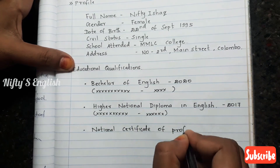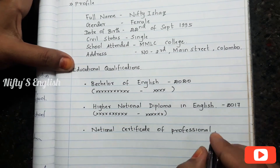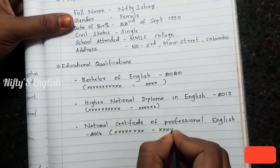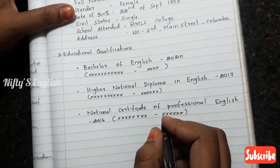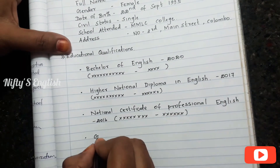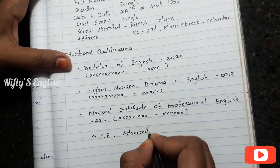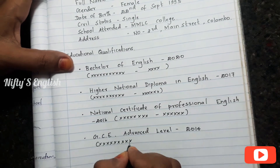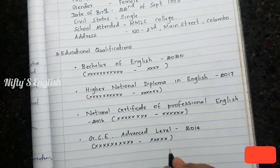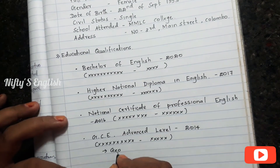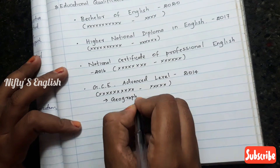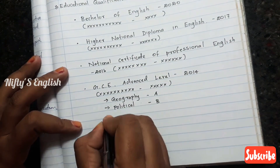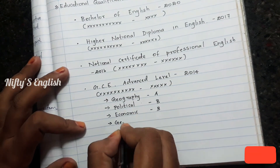The third one is National Certificate of Professional English 2016 — I put the institution's name and place. The fourth one is GCE Advanced Level 2014 — I put the school name and index number. The subjects are Geography, Political Economics, and General Test.